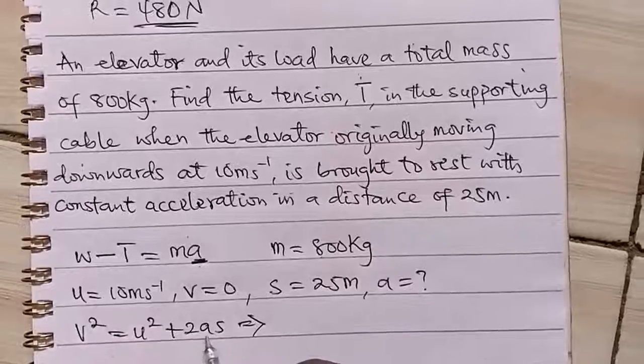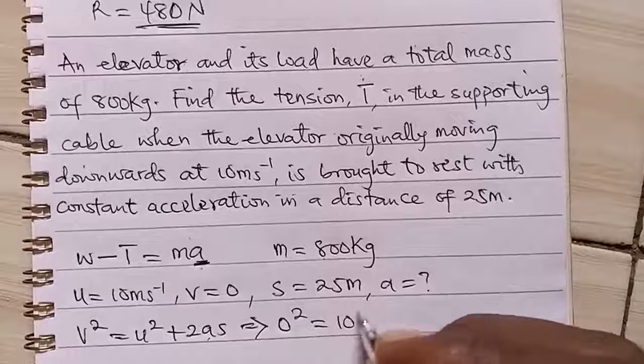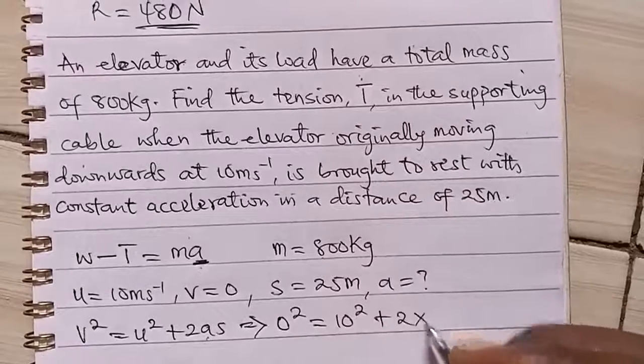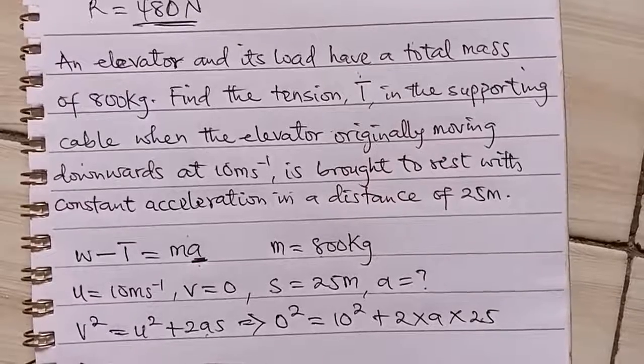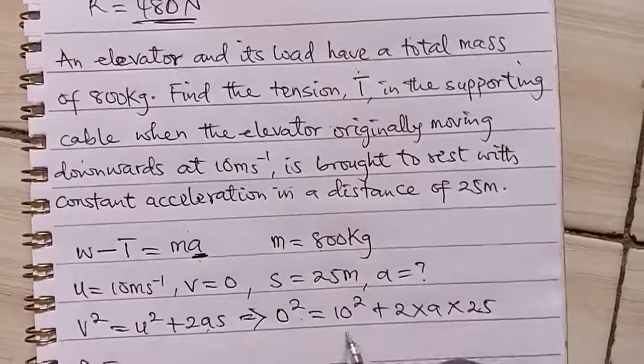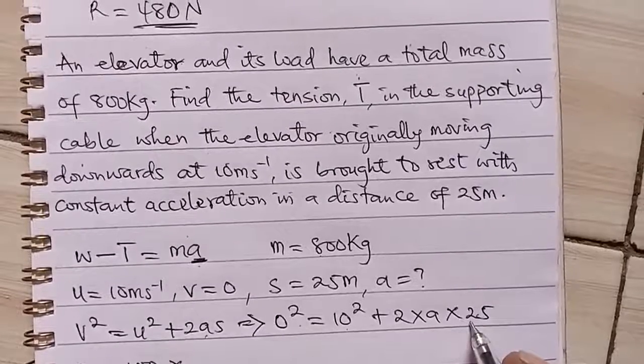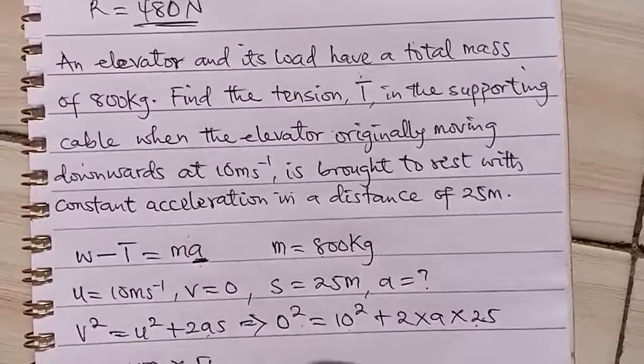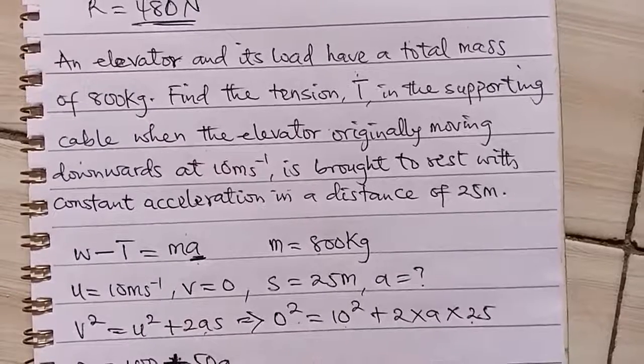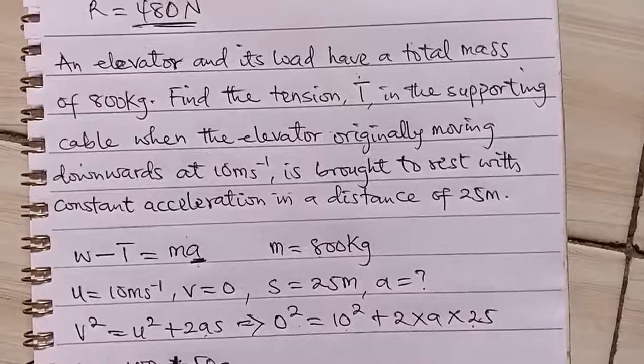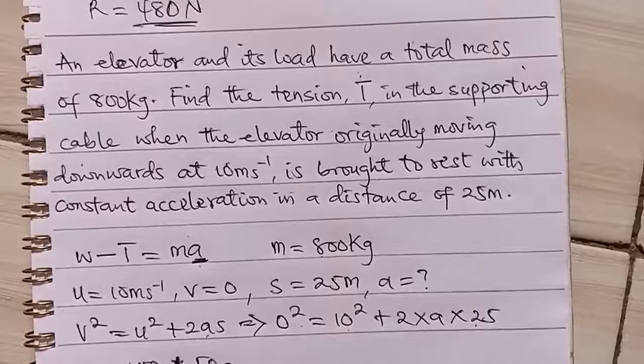If we plug in these values so that we can find acceleration, we will have that 0 squared is equal to 10 squared plus 2 times a times 25. What it means is that 0 squared is 0 is equal to 10 squared is 100 times 2 times 25 is 50. Then 50a. So if we push this 100 to this side, it becomes negative 100 is equal to 50a.